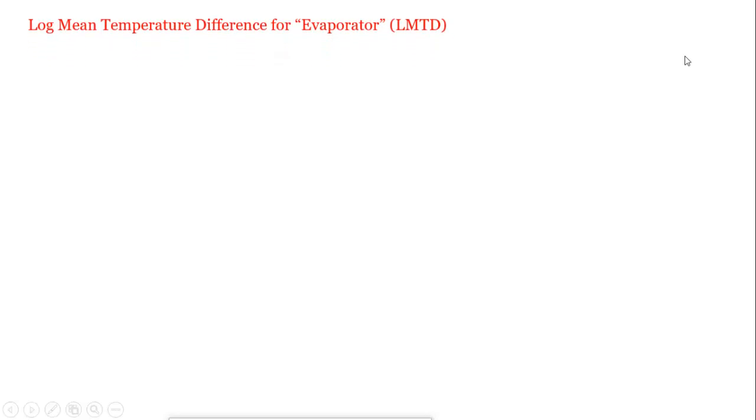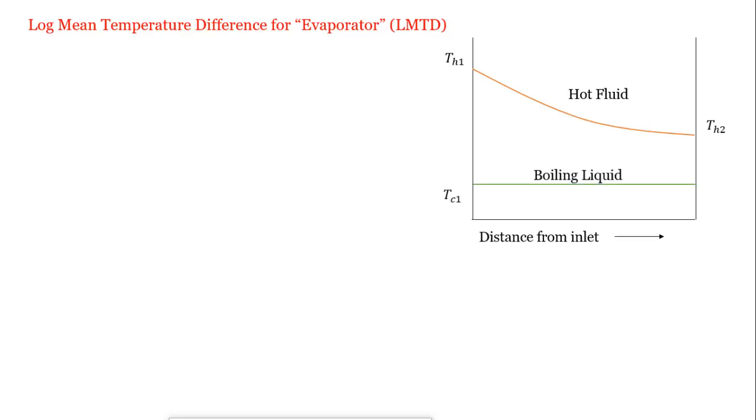Log-mean temperature difference for the evaporator. We plot the temperature distribution diagram. Hot fluid is at temperature TH1, and TH2 is the outlet temperature. Boiling liquid is at inlet temperature TC1 and outlet temperature TC2.